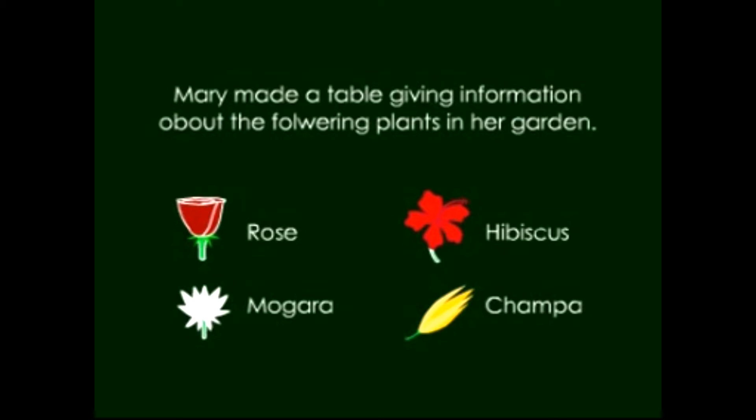Now name of the plant Rose. So first count how many rose flowers are there and make the tally marks. One, two, three, four, five, six, seven, eight. So eight rose flowers are there.